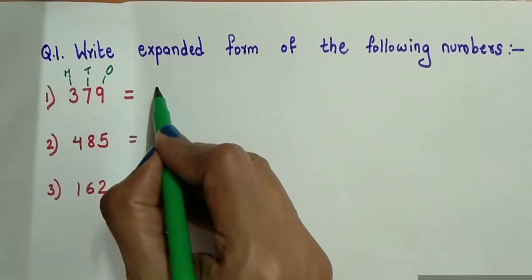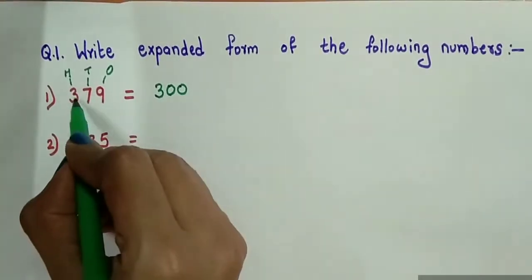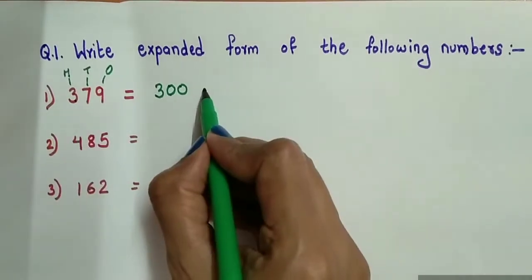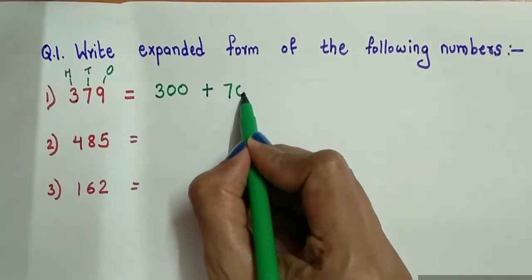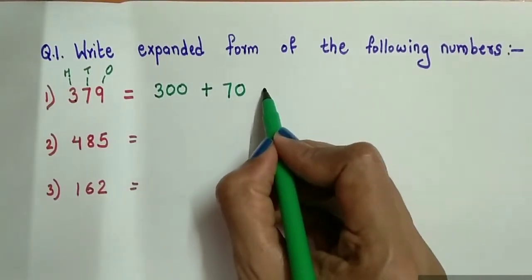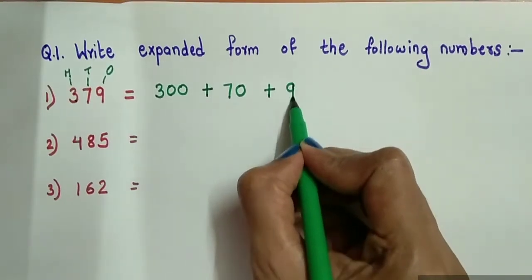Write 3 and add 2 zeros to it as it is at 100's place. Again add plus sign, write 7, and since 7 is at 10's place add 1 zero to it. Again add plus sign and write 9 as 9 is at 1's place.